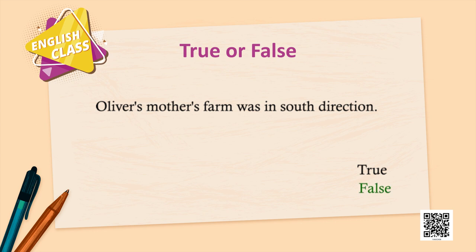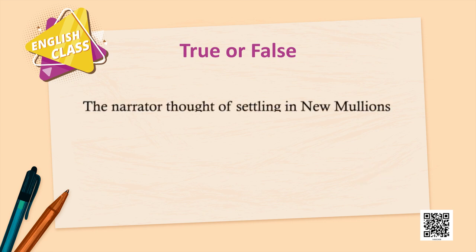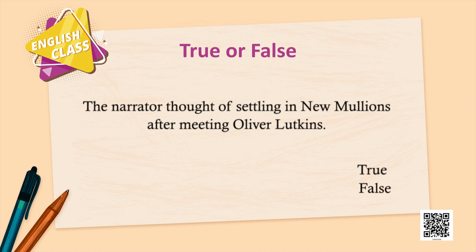Right, I mentioned that in the summary as well — it was in the north direction. To the eighth one: 'The narrator thought of settling in New Mullions after meeting Oliver Lutkins.' True or false? I guess this is true. Incorrect — the narrator was very impressed with Bill, but not with Oliver. He wanted to settle there earlier, but was embarrassed later when he knew that Bill was Oliver himself.